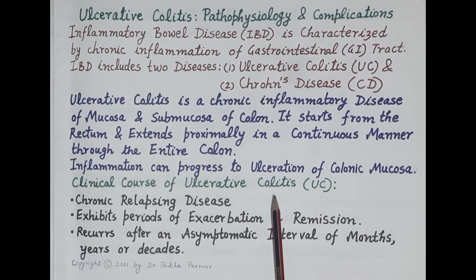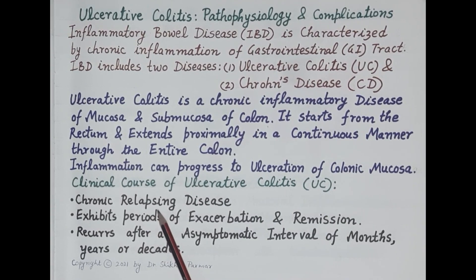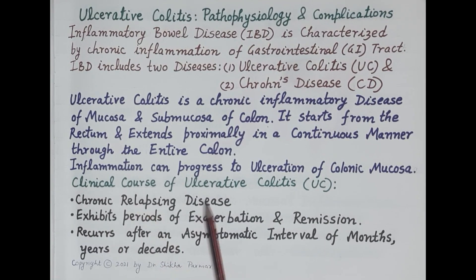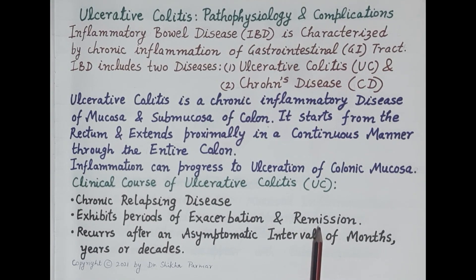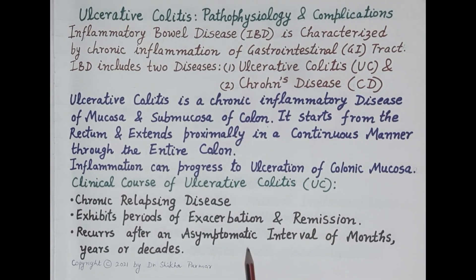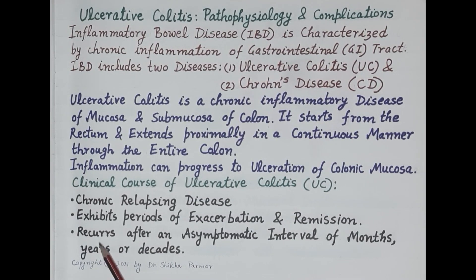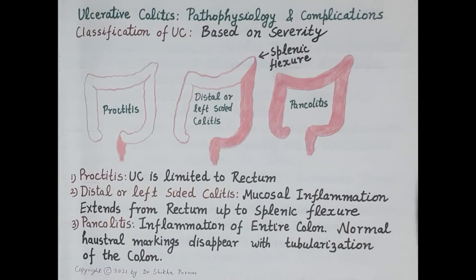The clinical course of ulcerative colitis is usually characterized by relapses that alternate with periods of remission — alternating between increase in symptoms and improvement in symptoms. Ulcerative colitis is a chronic relapsing disease exhibiting periods of exacerbation and remission. Relapse can occur after an asymptomatic interval of months, years, or decades.